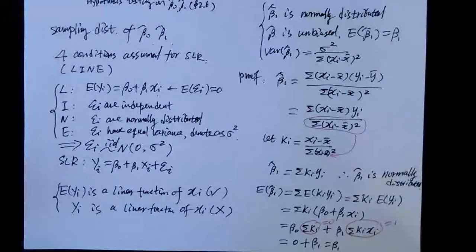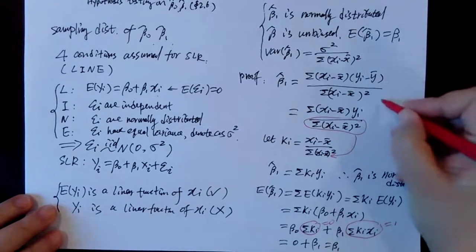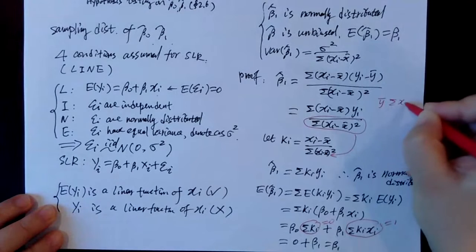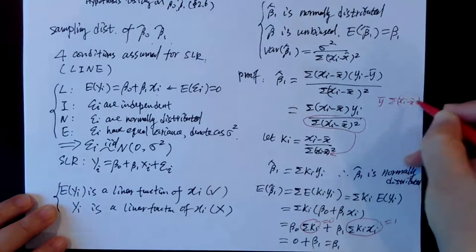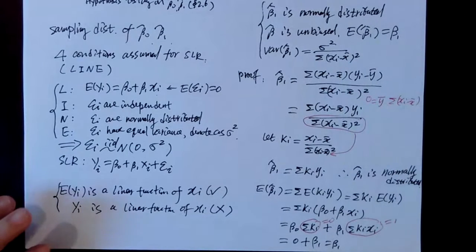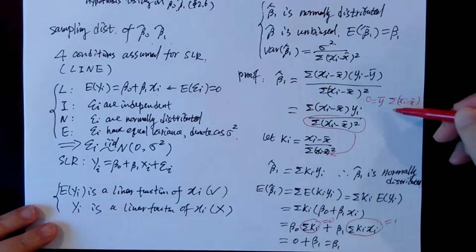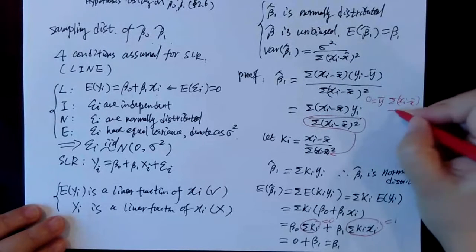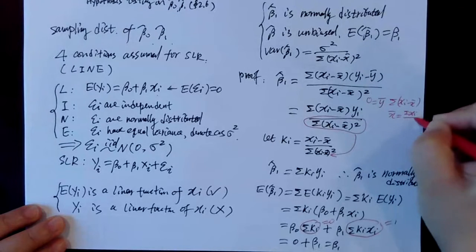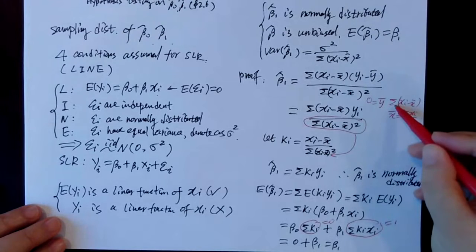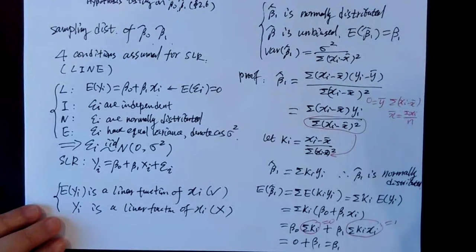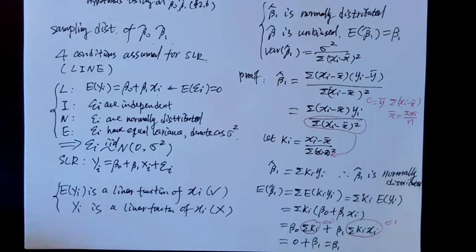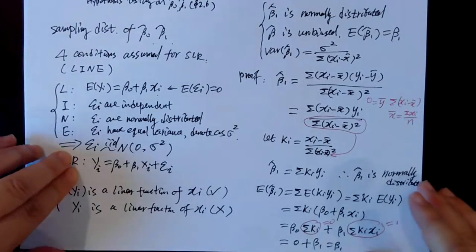Regarding why the y-bar term drops: y-bar times summation(xi minus x-bar) equals zero, because y-bar is constant with respect to the summation, and summation(xi) minus summation(x-bar) equals zero by definition of x-bar. So summation(ki) equals summation(xi minus x-bar) divided by summation(xi minus x-bar)^2, and the numerator is zero. Similarly, summation(ki*xi) can be rewritten as summation(xi minus x-bar)^2 over summation(xi minus x-bar)^2, which equals one.